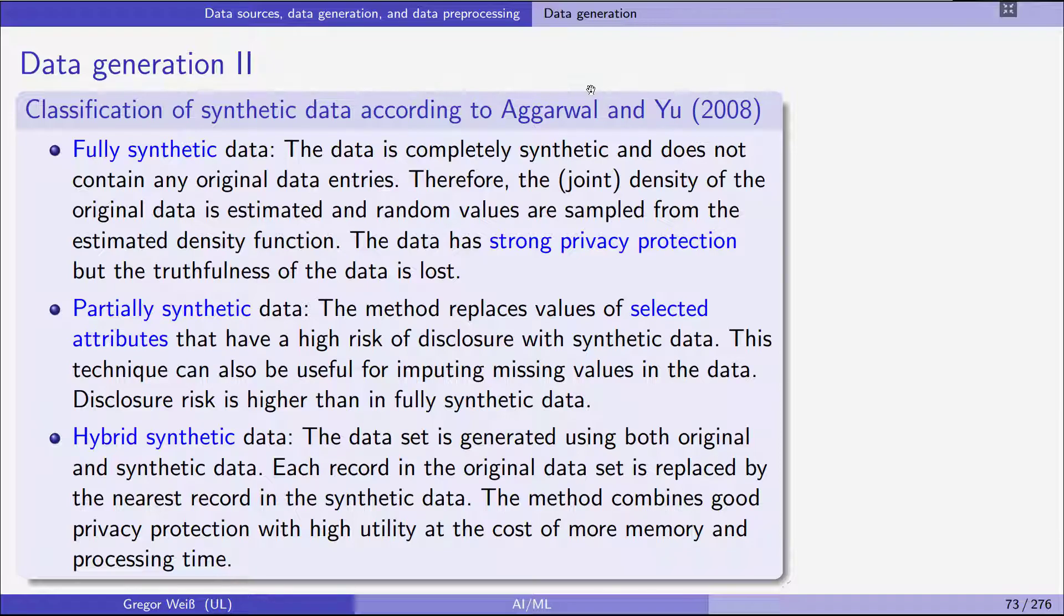Now, with partially synthetic data, this is the second possibility, we replace values of selected attributes that have a higher risk of disclosure with synthetic data. Now, this could, for example, be in the very simplest case, could be that we replace the name, the first name and the surname of our observations, for example, when it comes to credit card data. Now, if we call everyone Mr. X, Mrs. X, it could be that actually this doesn't change the value of the data, but we preserve the privacy of the real people behind the data or behind the original data.